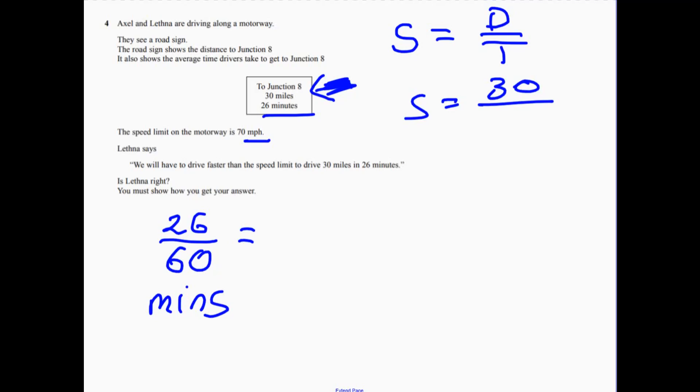So if I do 26 divided by 60, that gives me 13 over 30. Or if you prefer as a decimal, it's 0.43 recurring.